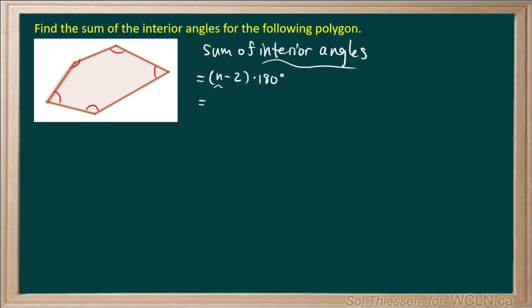So for this polygon, we have 5 interior angles, and I've drawn them all in red. Now we have to find n, the number of sides, which coincidentally is also the number of interior angles.